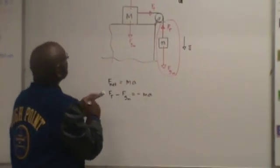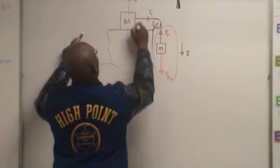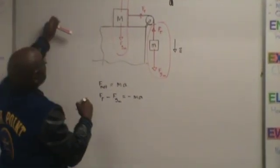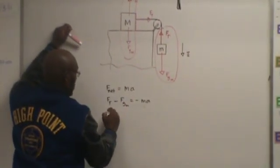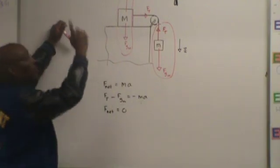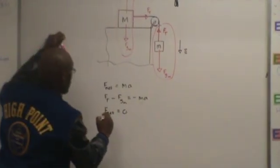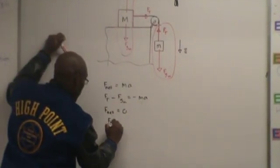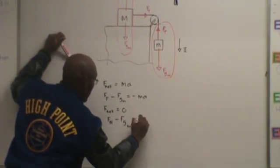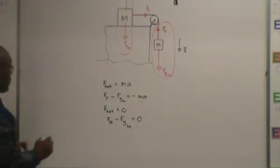Now, for this part, F net force, F net is zero. There is no acceleration. So we have Fn minus Fg uppercase M equals zero. That's our second equation.